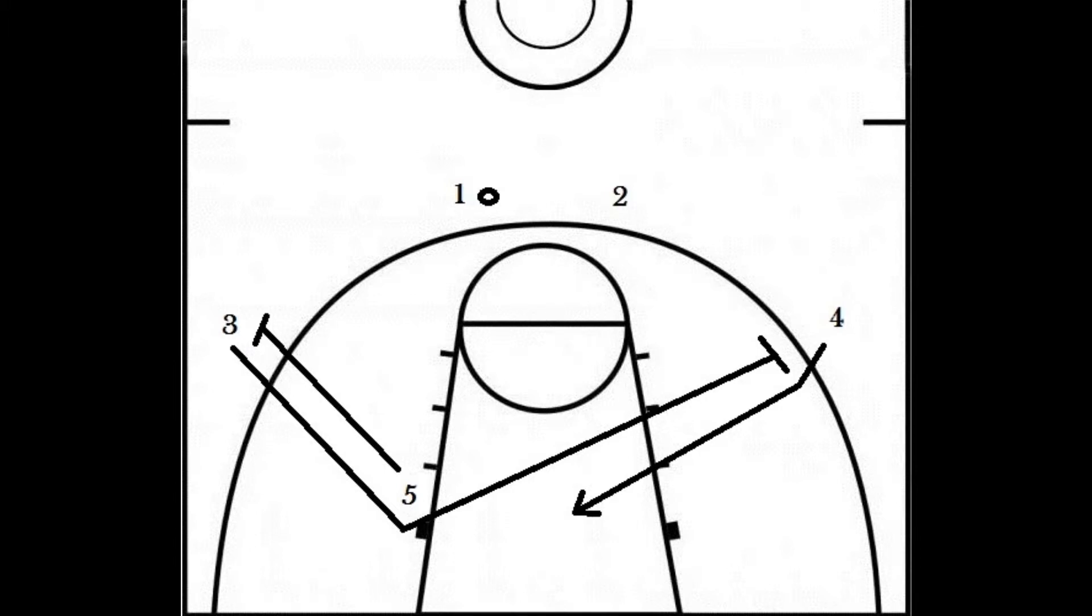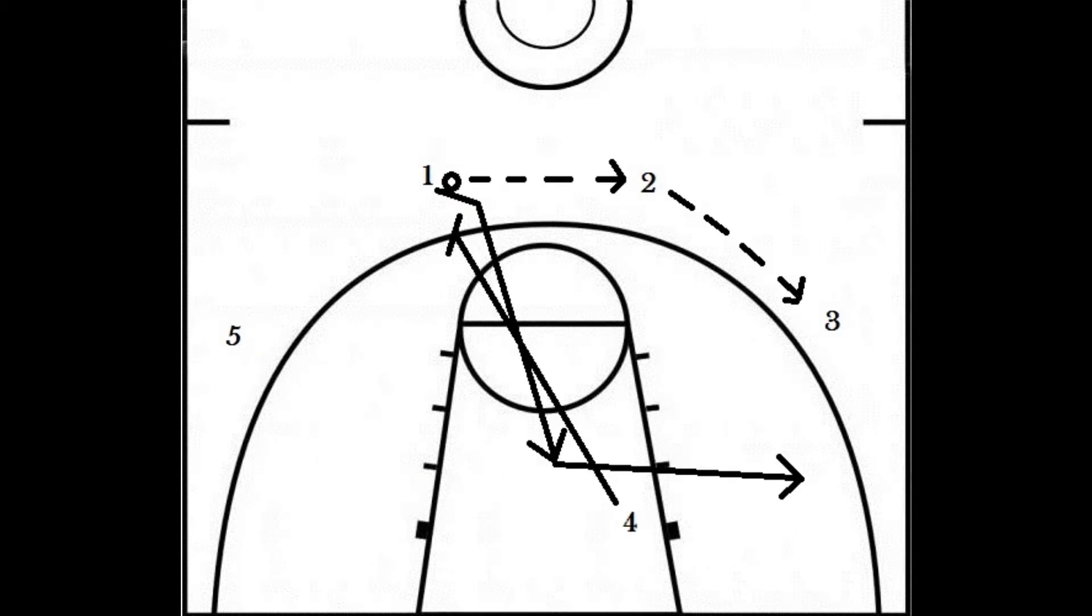If player 4 does not receive a pass, player 4 will set a screen for player 1 after player 1 passes the ball to player 2. Player 1 will then cut to the net looking for the pass from players 2 or 3.